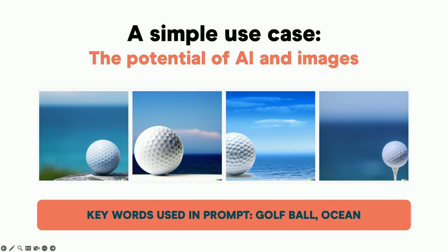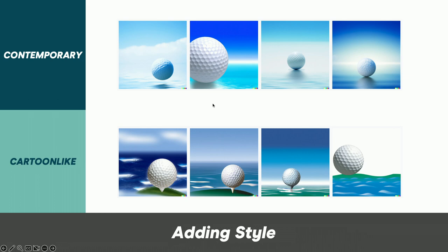Before I get into the real downer of it all, I want to paint the potential of what we can do with AI first because I find it really interesting. So a while back I was asked to do a presentation for a user group, and I created some prompts based on something I thought had universal appeal: golf and the ocean. I wanted to take two simple words and start putting them through AI so I could see the effects that my words had on the art.